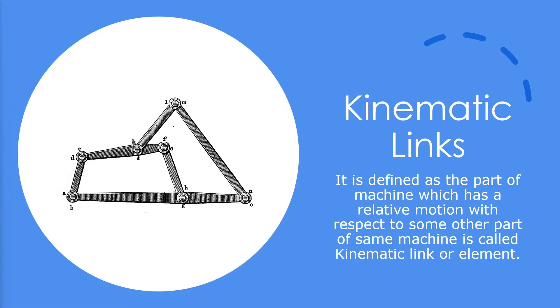For example, here we can see there is a mechanism made up of several links. So this is one link, this is another link, this is another link, and so on. I hope now you can understand these individual entities are known as links.